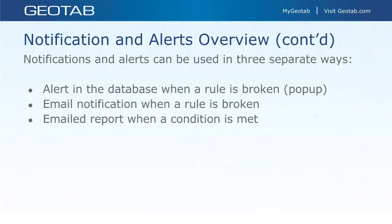Notifications and alerts can be used in three separate ways. Number one: you can have an alert in the database when a rule is broken, shown as a pop-up. Number two: you can receive an email notification when a rule is broken — you don't need to be logged into the database for that. Number three: you can get an emailed report when a condition is met — that is the send report feature, which is relatively new.